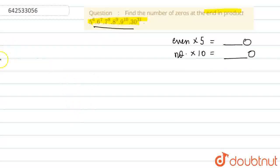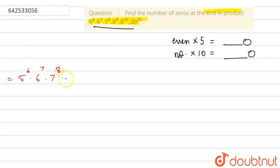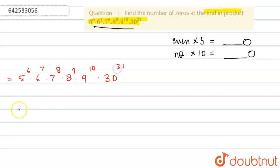So we have 5 to the power 6, times 6 to the power 7, times 7 to the power 8, times 8 to the power 9, times 9 to the power 10, times 30 to the power 31. This will be equal to...